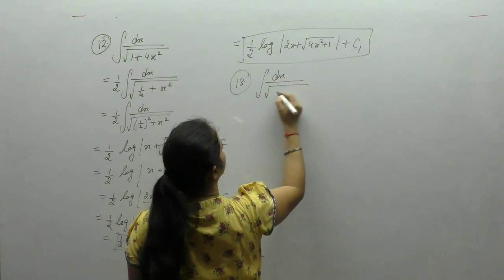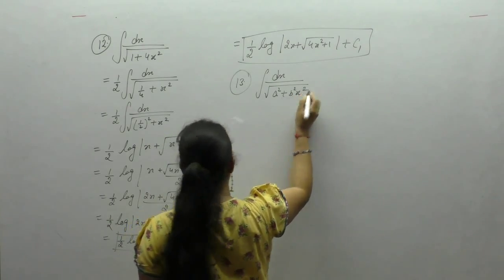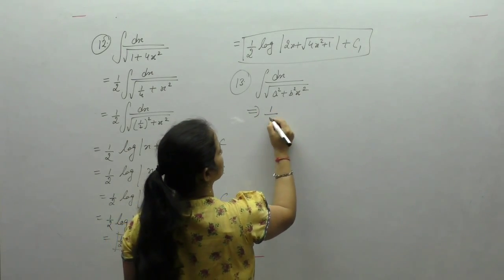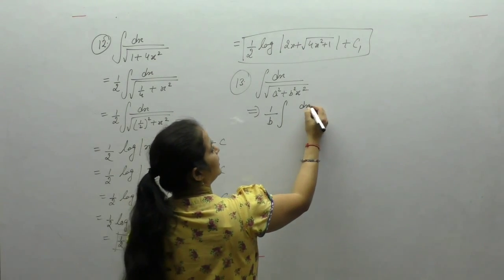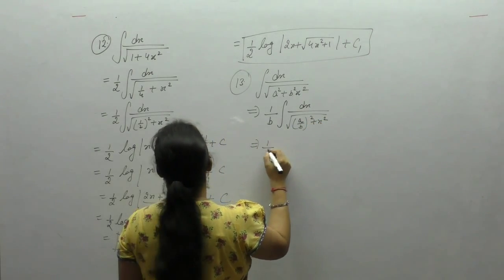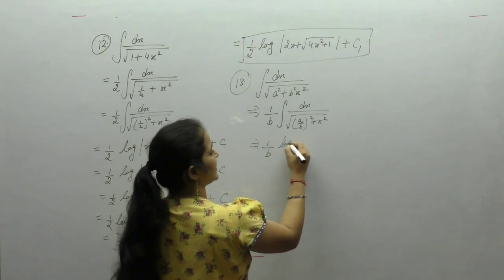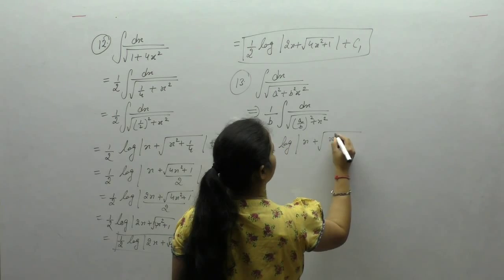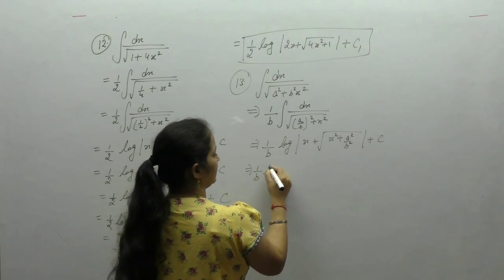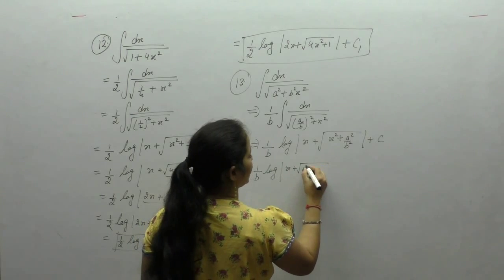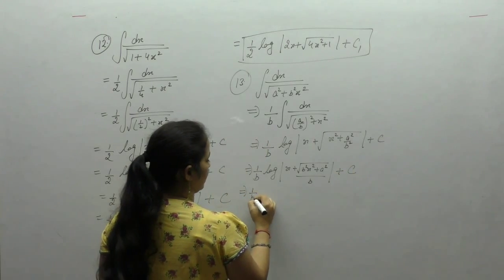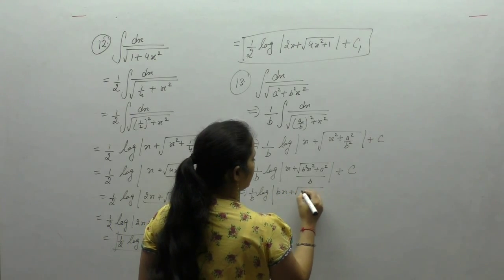Next is the integral of 1 upon square root of (a square plus b square x square). Take b square common: square root of b square is b, giving dx upon square root of (a upon b whole square plus x square). Using the formula, integral of 1 upon square root of (x square plus a square) equals log of (x plus square root of x square plus a square) plus c. Result: 1 by b times log of (x plus square root of b square x square plus a square) upon b plus c.